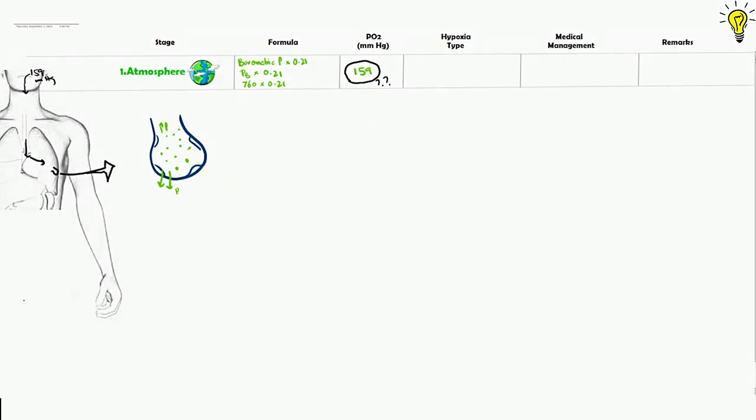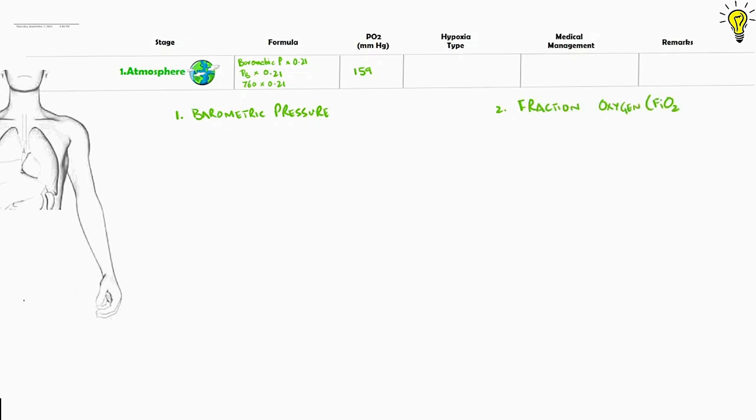Right. So, as per the equation, two factors dictate the atmosphere pressure of oxygen around us. Number one, the barometric pressure. And number two, the friction of oxygen being inspired.